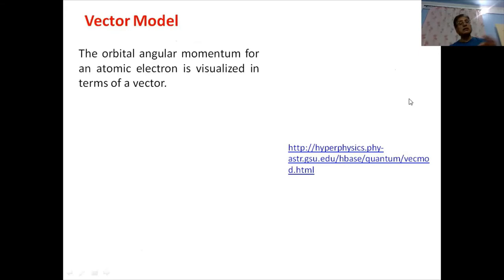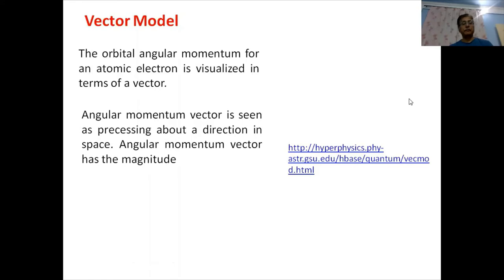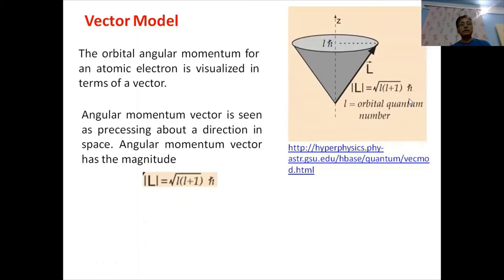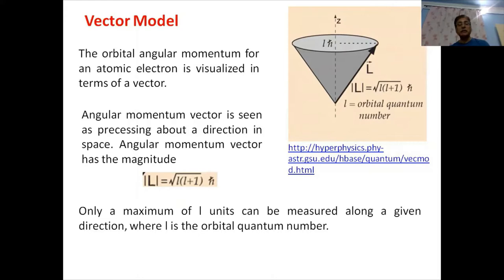Let us consider a vector model to better understand the Zeeman effect. The orbital angular momentum for an atomic electron is visualized in terms of a vector. The angular momentum vector is seen as precessing about a direction in space. The angular momentum vector has magnitude L = √(l(l+1)) ℏ. Only a maximum of l units can be measured along a given direction, where l is the orbital quantum number. This means the angular momentum vector is quantized and will have only certain selected values.